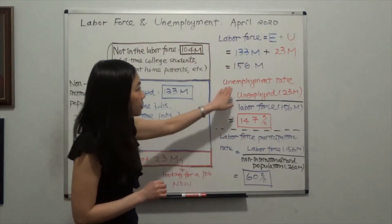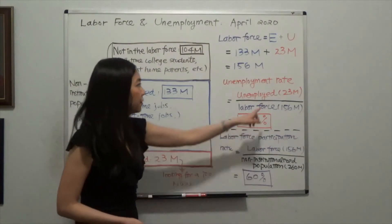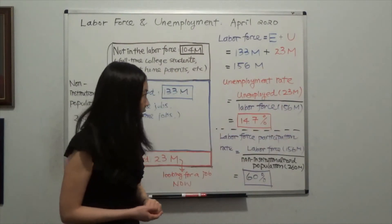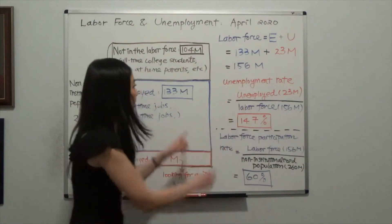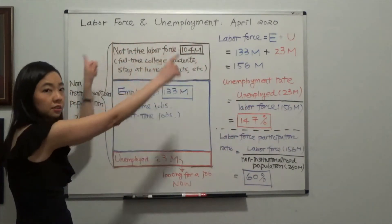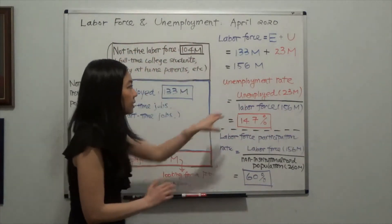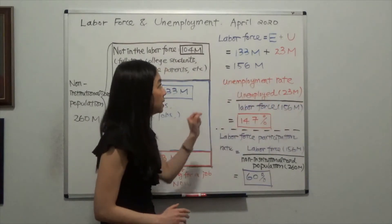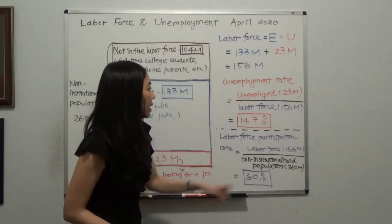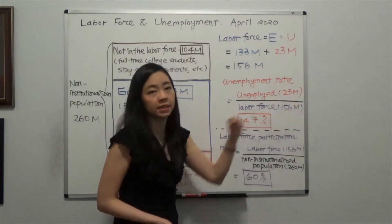The unemployment rate is the number of unemployed, 23 million, divided by the labor force. Notice that it's not the whole non-institutionalized population, but only the labor force, meaning the employed plus the unemployed. That's 156 million.